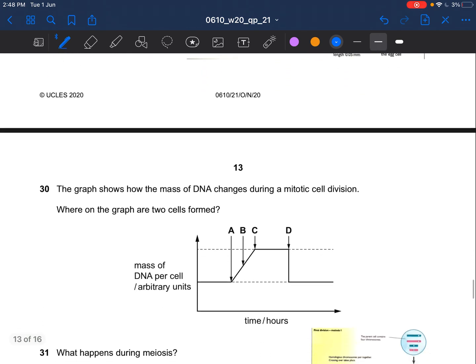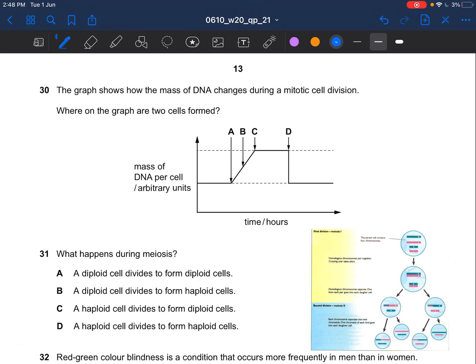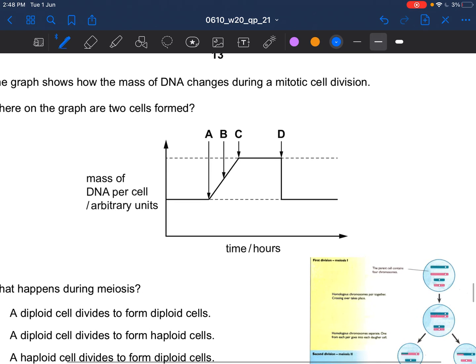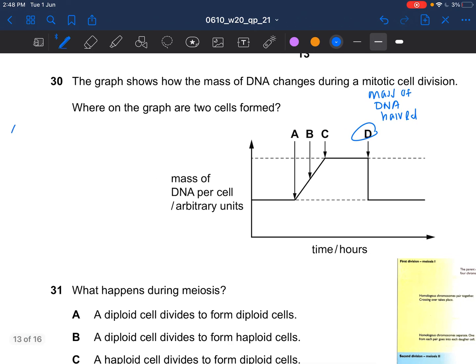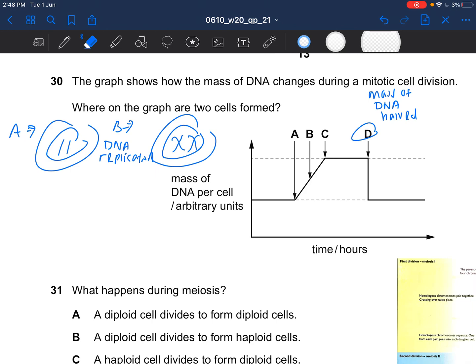Next question. The graph shows how the mass of DNA changes during a mitotic cell division. Where on the graph are two cells formed? The answer would be D. As you can see at D the mass of DNA halves. What happens at A: your cell looks something like this. Then at B it looks something like this, DNA replication occurs. I'm sorry it is C not B. At C it looks like this. Then at D the cell would split, divides into two. So the answer would be D.